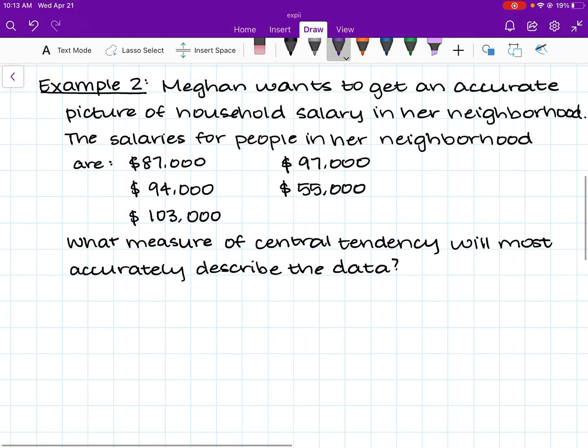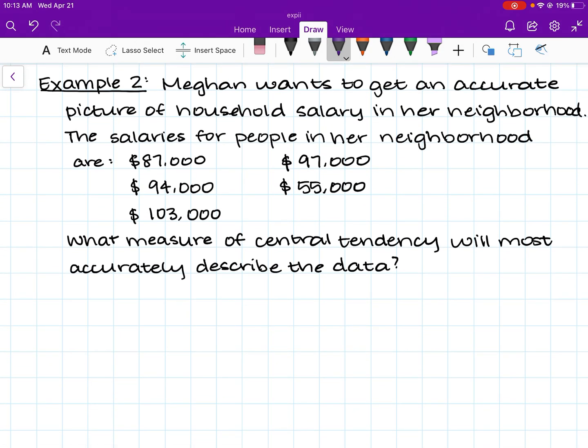Let's go to example problem number two. Megan wants to get an accurate picture of household salary in her neighborhood. The salaries for people in her neighborhood are the following. What measure of central tendency will most accurately describe the data? So our options are mean, median, and mode. Mean, as we just saw, covers the average, median covers the middle value, and mode is the most frequent value.